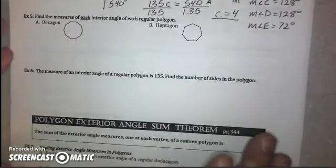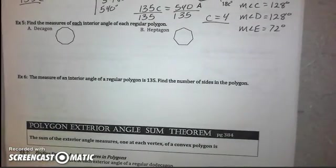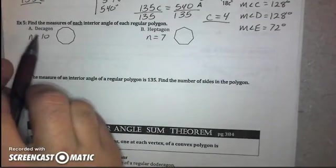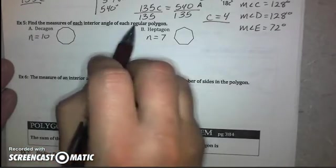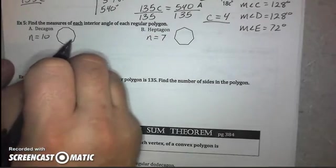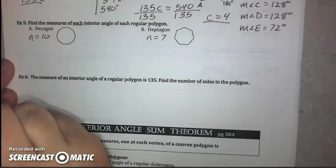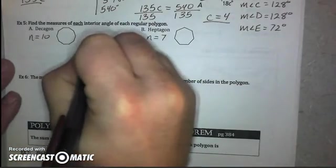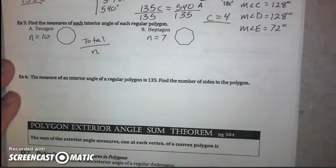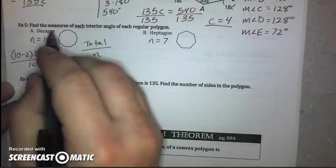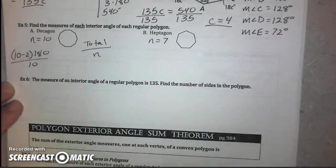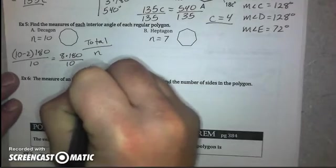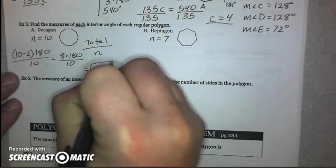Let's go ahead and move on to example five. And I'm going to get you started and let you take some time to finish that. For example five, we have a decagon, then a heptagon. And they ask you to find the measure of each interior angle, but they are regular polygons. That means each of these ten angles is exactly the same measure. So, all we have to do is take our total and divide it by n, the number of sides. Which means for the first one, we're going to do 10 minus 2 times 180 and divide that by 10. Which should give us a total of 144 degrees for each of these ten angles.